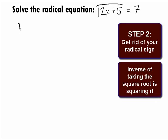When we square both sides, we will have the square root of 2x plus 5 squared equals 7 squared. When we square the square root on the left side, we get what was inside, which is 2x plus 5 equals, and 7 squared will give us 49.